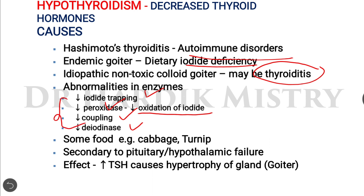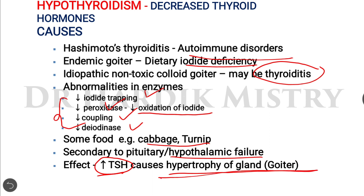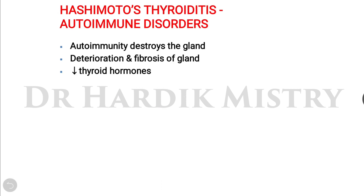Some foods such as cabbage and turnip can also contribute. Secondary causes include pituitary and hypothalamic failure — when TSH is deficient, the condition is hypothyroidism. Increased TSH causes hypertrophy of the thyroid gland, leading to goiter. In Hashimoto's thyroiditis, an autoimmune disorder, autoimmunity destroys the thyroid gland, causing deterioration and fibrosis, resulting in decreased thyroid hormones.